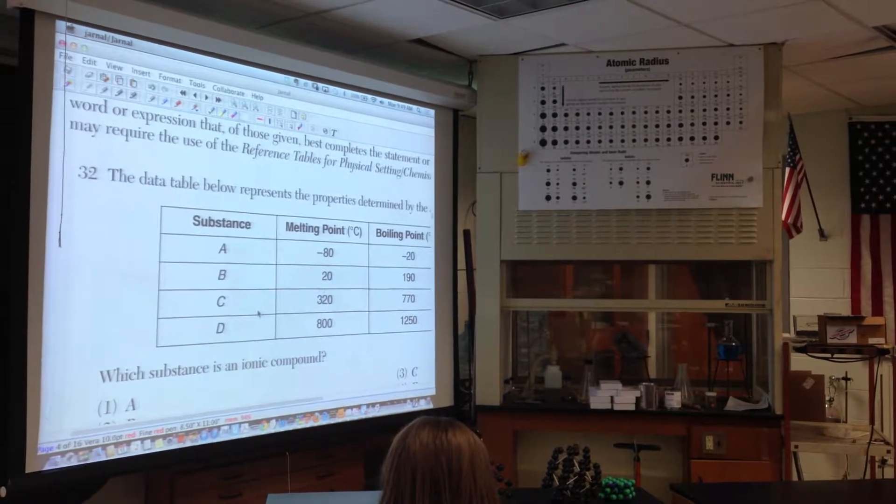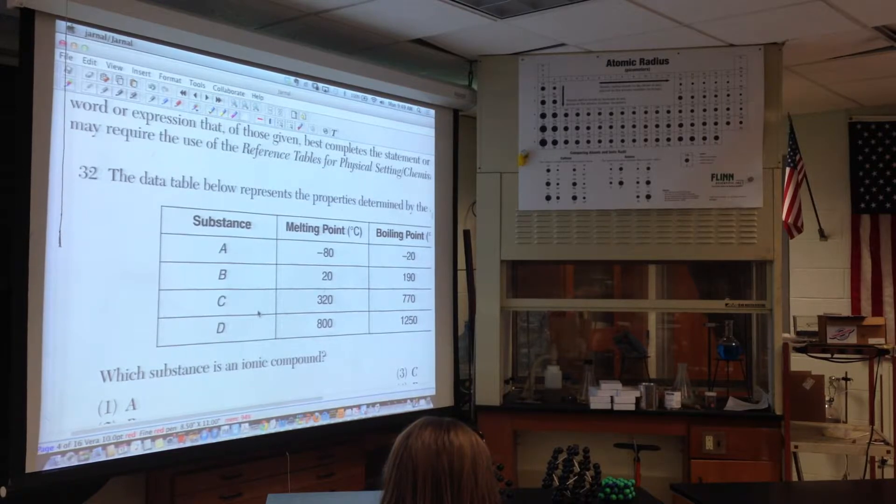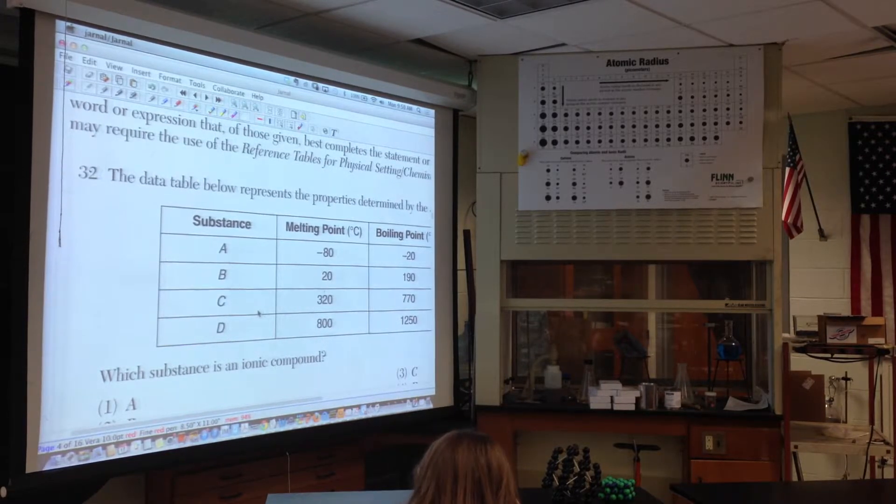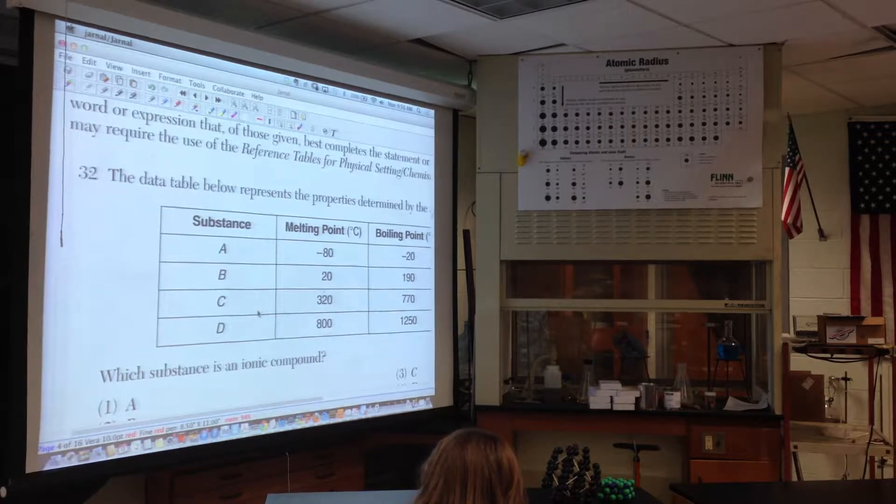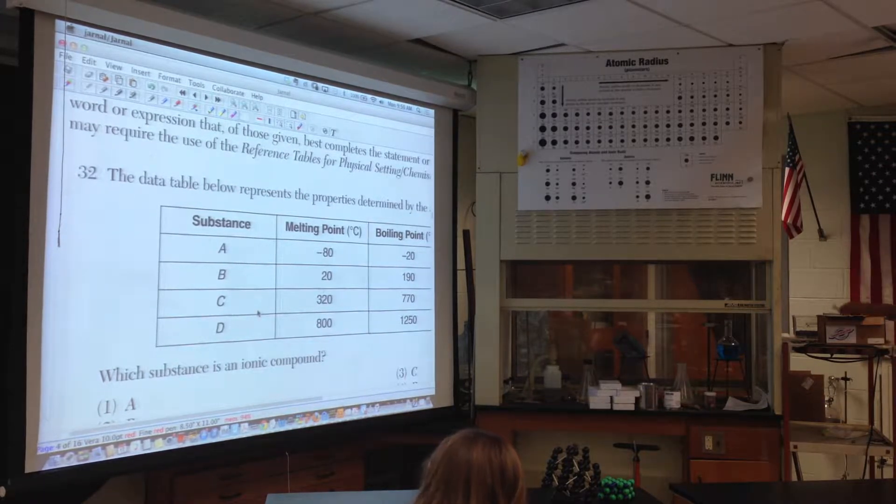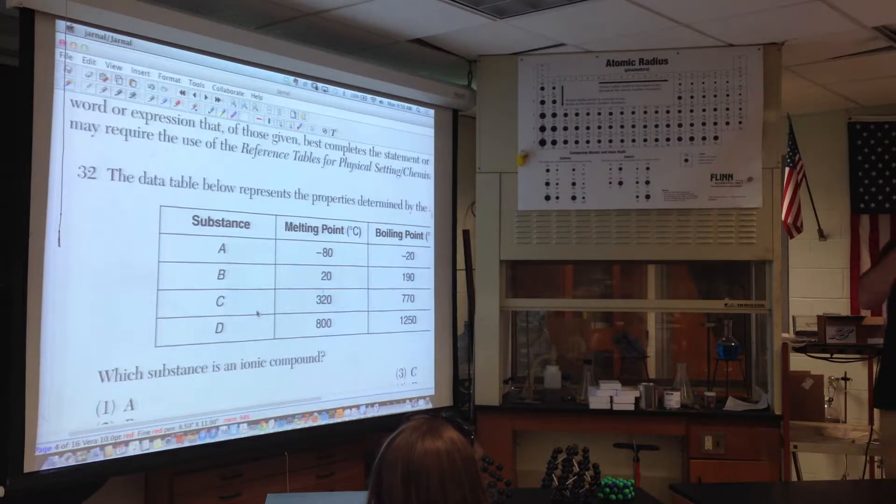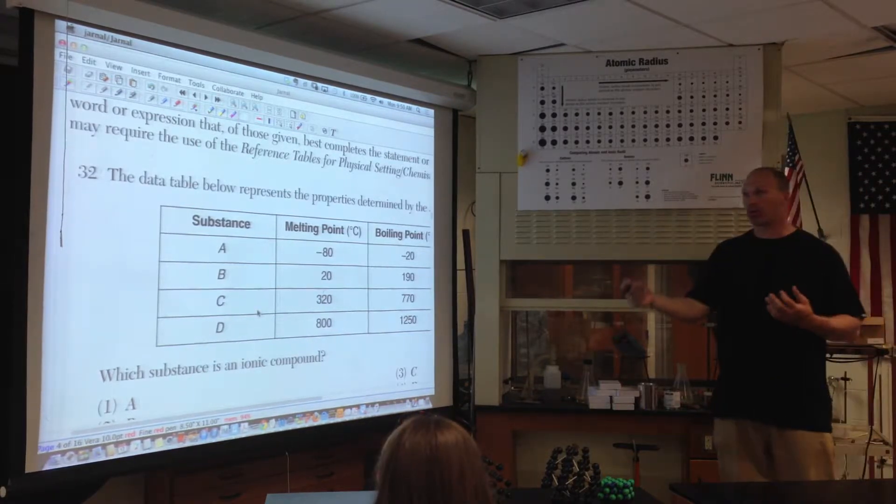All right, so let's continue on with number 32. Now this is the part of the test where that repeats itself now. We did one through, in this case, 31, sometimes it's one through 30, and that goes from atomic structure to nuclear.